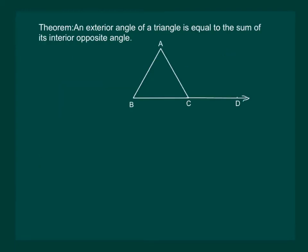Let us now prove a result which says that the exterior angle of a triangle is equal to the sum of its interior opposite angles. So we have to prove that the measure of angle ACD is equal to the measure of angle A plus the measure of angle B.